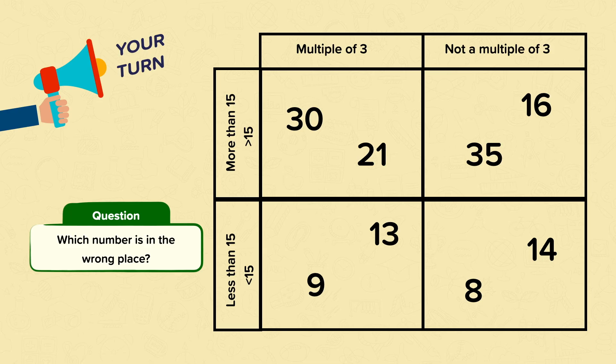Well done if you discovered that thirteen is in the wrong place. Thirteen is less than fifteen, so it's in the correct row, but it's not a multiple of three, so it's in the wrong column. It should be in the 'not a multiple of three' column. Now it's correct. Well done if you spotted it.